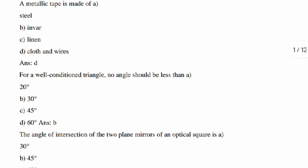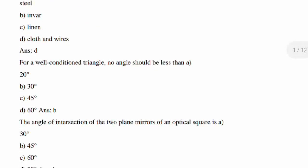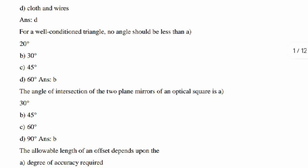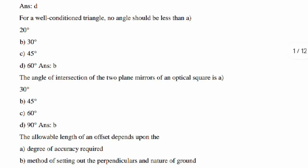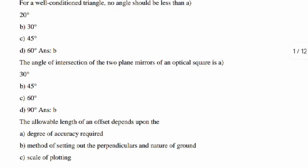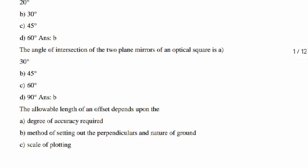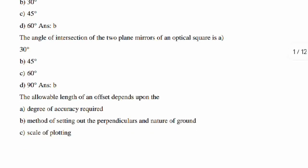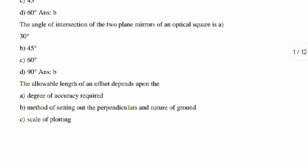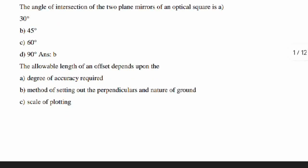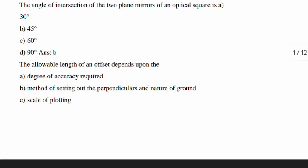Just go through them. A metallic tape is made of cloth and wires. For a well-conditioned triangle, no angle should be less than 30 degrees. The angle of intersection of two plane mirrors of an optical square is 45 degrees.